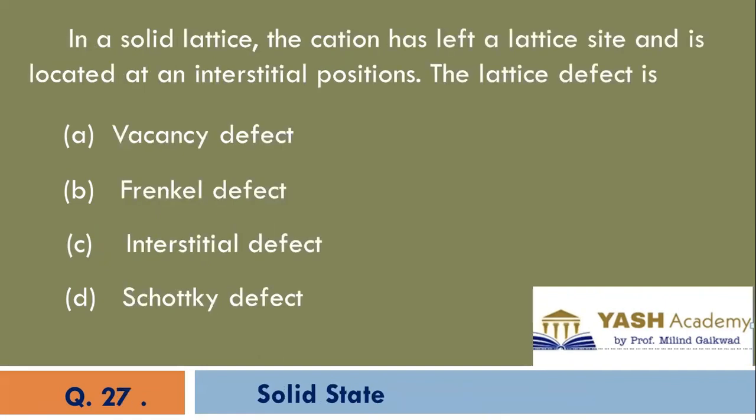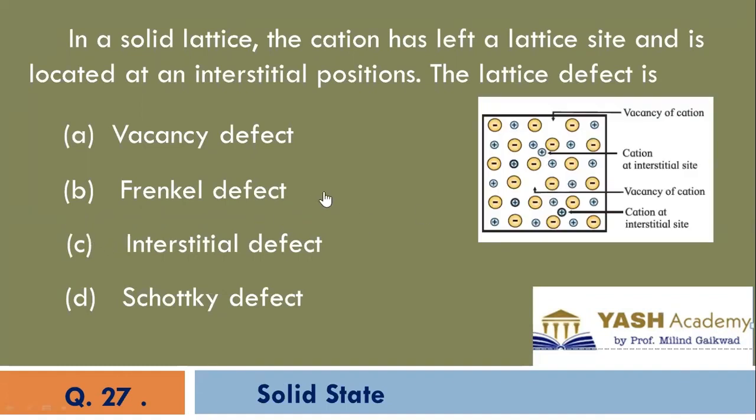In a solid lattice, the cation has left a lattice site and is located at an interstitial position. The lattice defect is, B is the correct option.